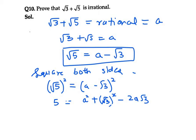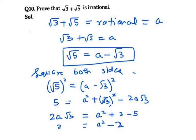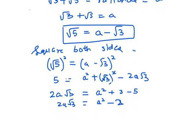Now we can get the value of √3 on one side. Bringing −2a√3 to the left hand side gives 2a√3 = a² + 3 − 5, which simplifies to 2a√3 = a² − 2. Dividing both sides by 2a, we get √3 = (a² − 2) / 2a.